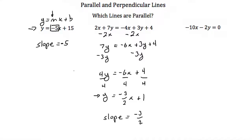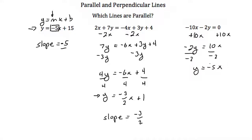Since this slope is negative 3 halves and the first slope is negative 5, we know that these lines are not parallel. Let's try our third equation: negative 10x minus 2y is equal to 0. Adding 10x to both sides gives us negative 2y is equal to 10x. Dividing everything by negative 2, we get y is equal to negative 5x. This is in slope-intercept form — think of it as plus 0 — so the slope is negative 5. So we know that our third equation and our first equation are parallel lines.